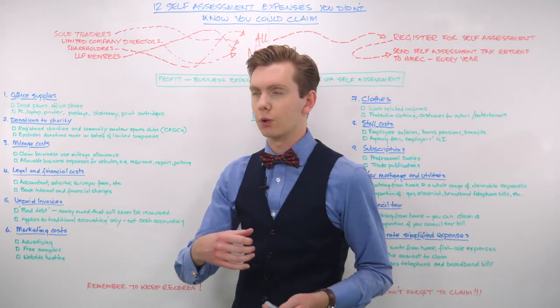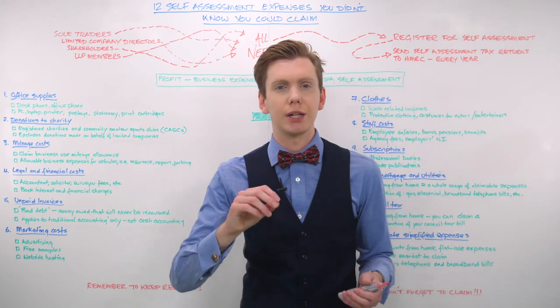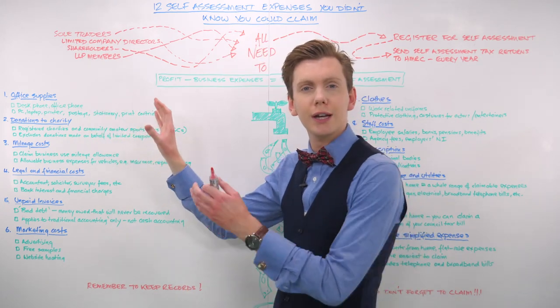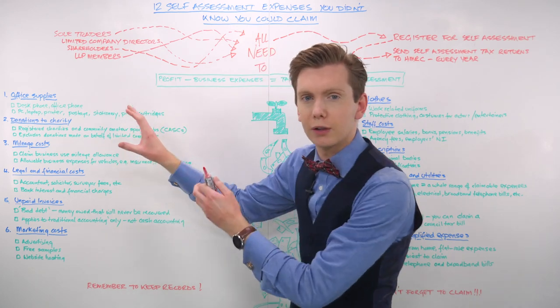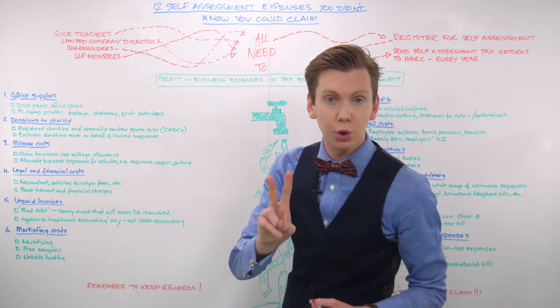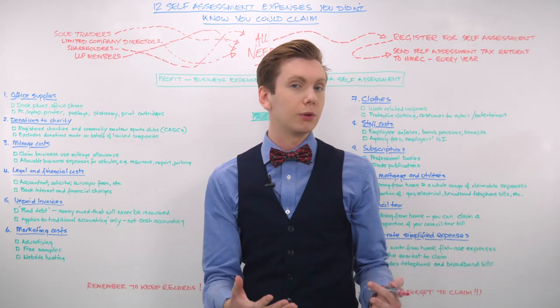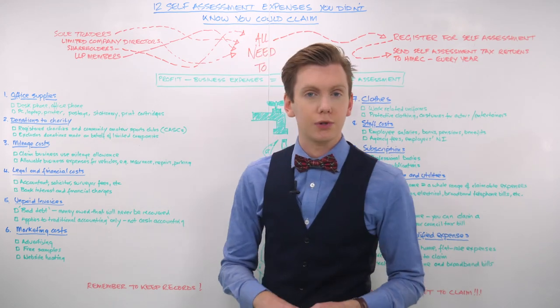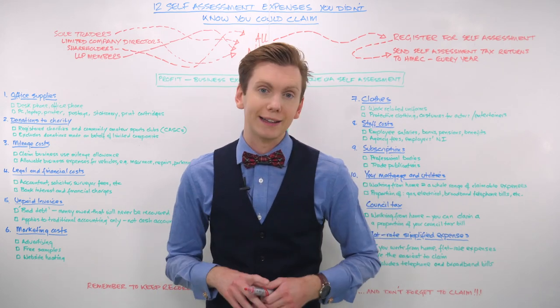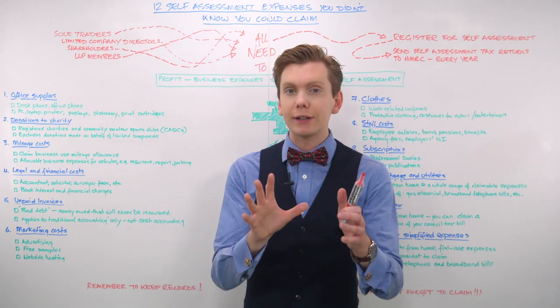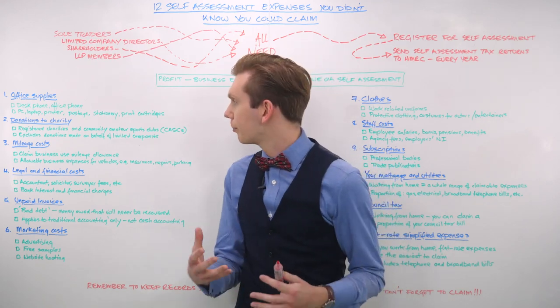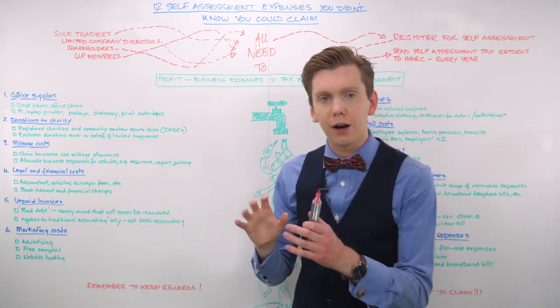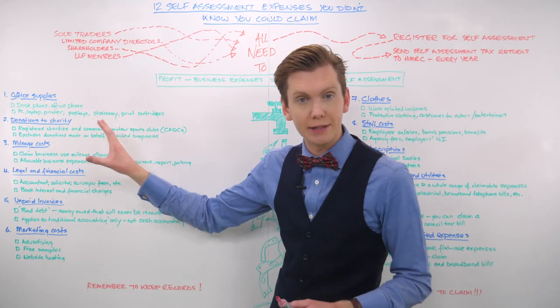HMRC will allow you to claim a range of expenses pertaining to your office supplies, including your desk phone, your mobile phone, your fax machine, postage costs, business stationery, printing costs, any computer software that your business uses for less than two years, and any computer software that your business uses and makes regular payments to in order to renew the license. You can even claim for your laptop and tablet or home computer, but only in so far as it is used for business.